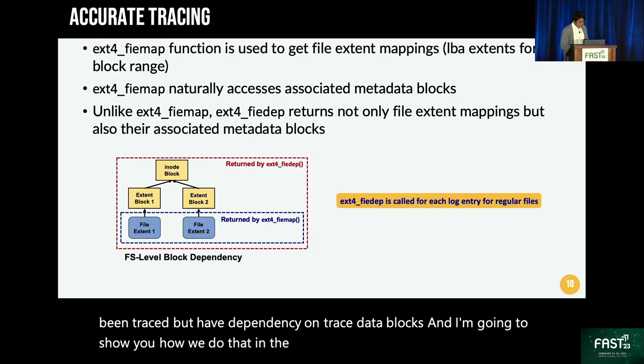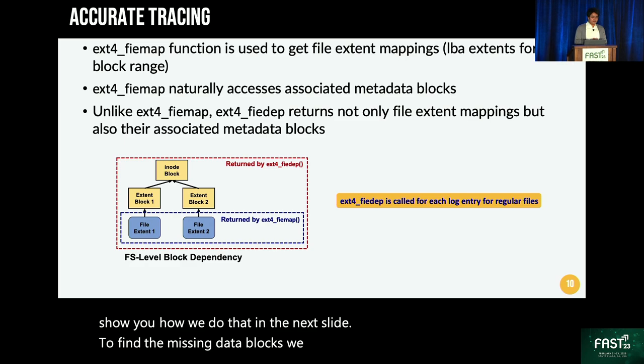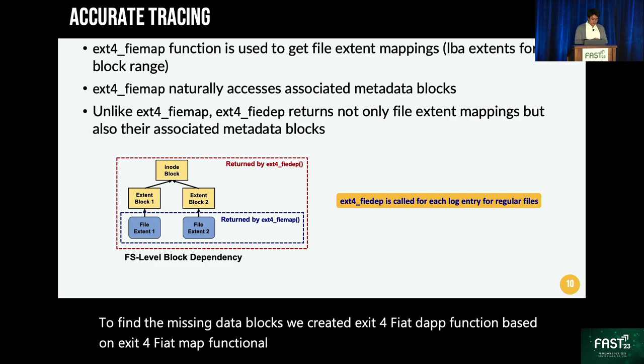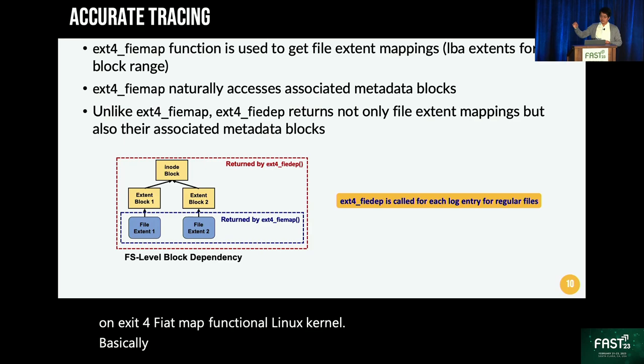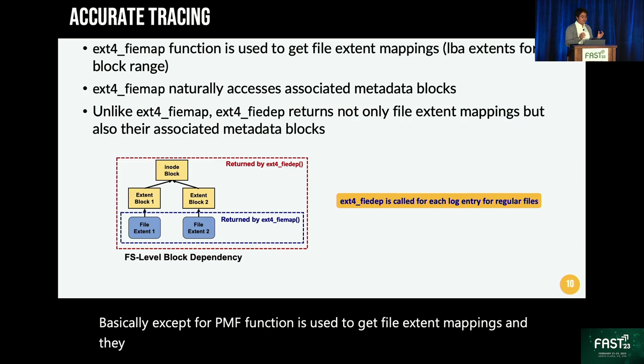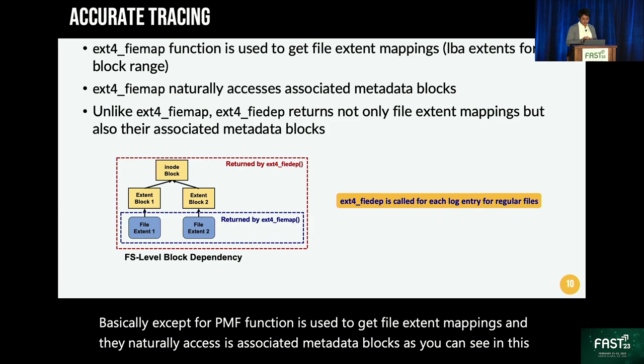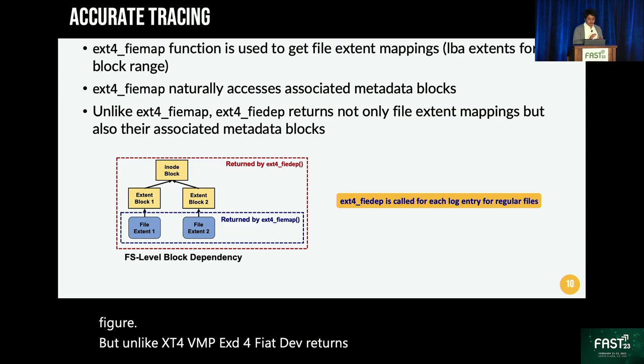To find missing metadata blocks, we created an ext4-phiadapt function based on the ext4phiadapt function of the Linux kernel. Basically, ext4phiadapt is used to get file extent mappings and it naturally accesses associated metadata blocks, as shown in the figure. Unlike ext4phiadapt, our ext4-phiadapt returns not only file extent mappings but also their associated metadata blocks. This function is called for each log entry of regular files.